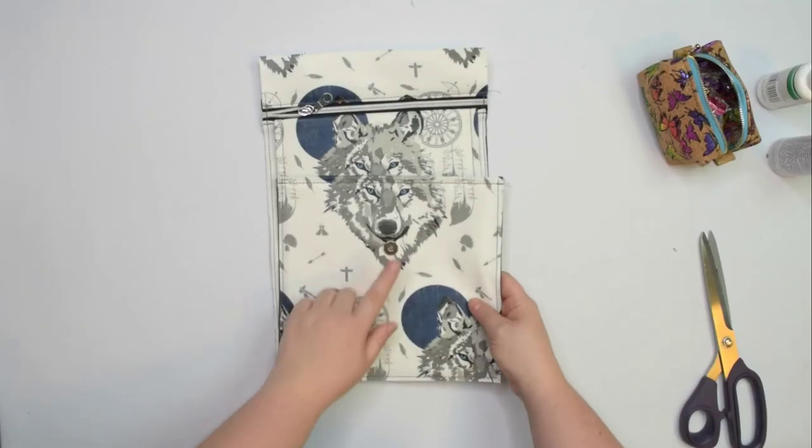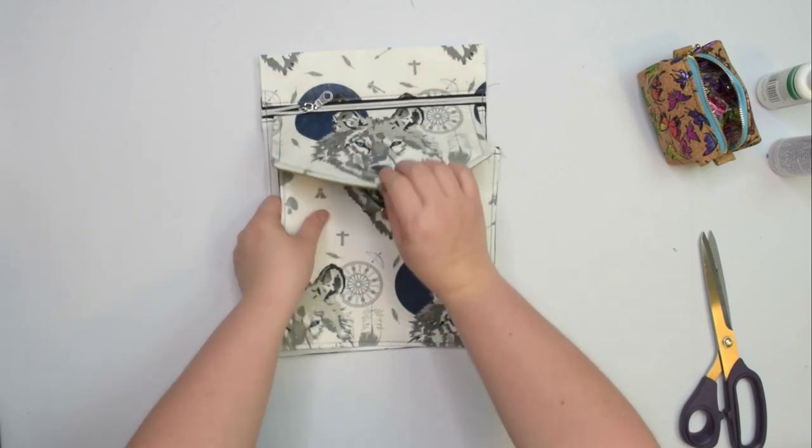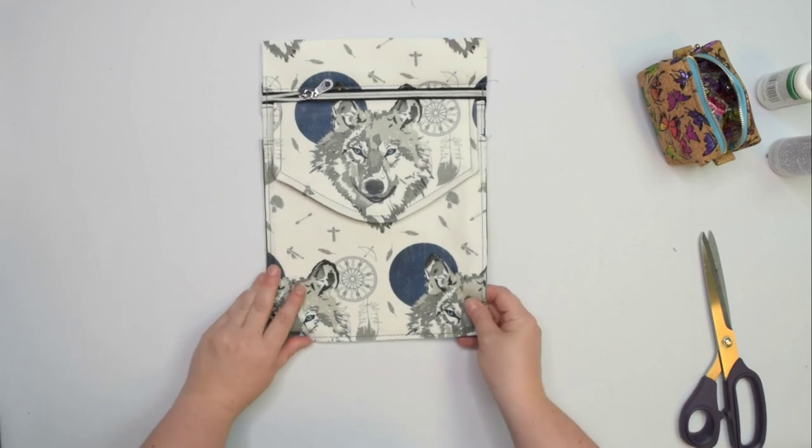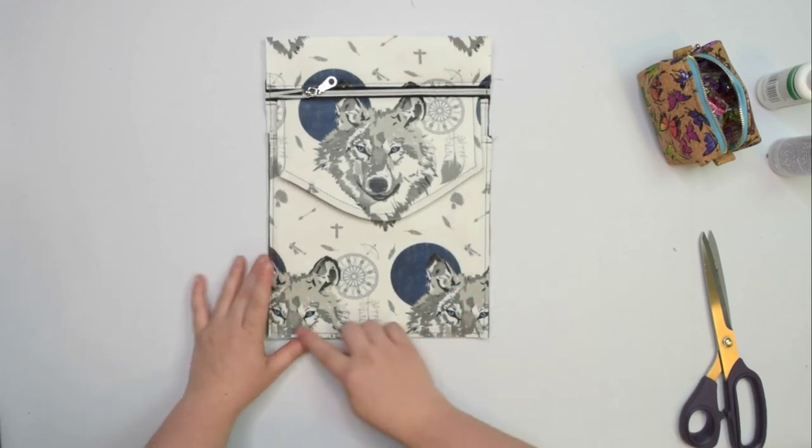Now take the slip pocket and place it under the flap, snapping the magnetic closure. Make sure the slip pocket is straight, then we can baste it to the middle panel.